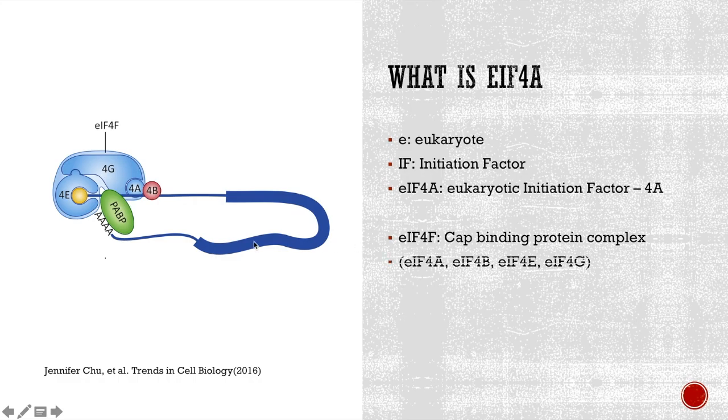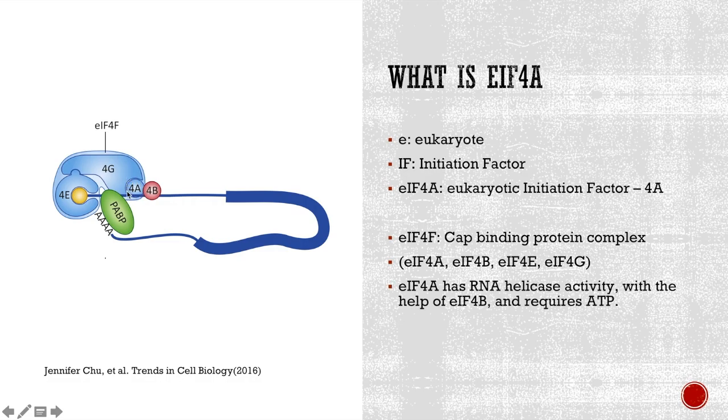EIF4F composes of four subunits: EIF4A, 4B, 4E, and 4G. Each subunit has its own functions. For example, EIF4E has cap binding activity. EIF4G can stabilize cap binding, EIF3, and polyA tail binding protein. In terms of EIF4A, it has RNA helicase activity with the help of EIF4B, and this activity requires ATP.